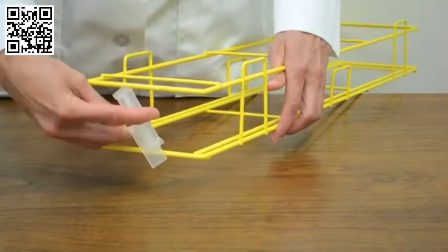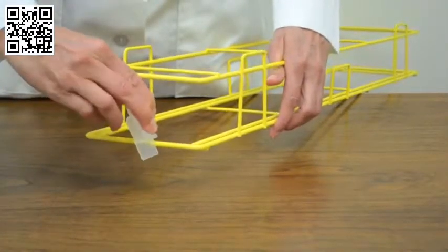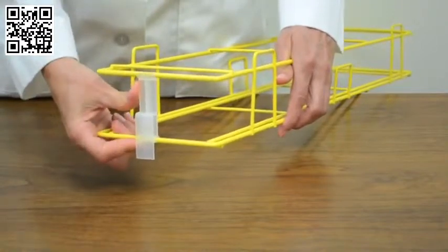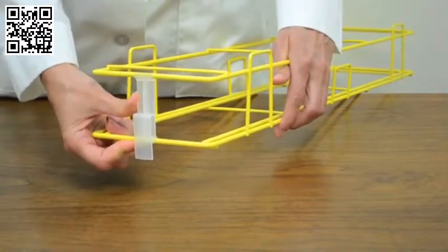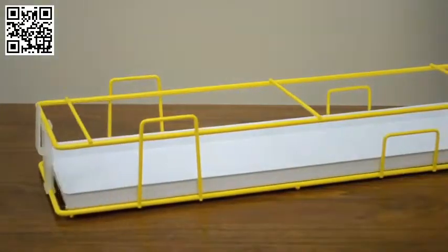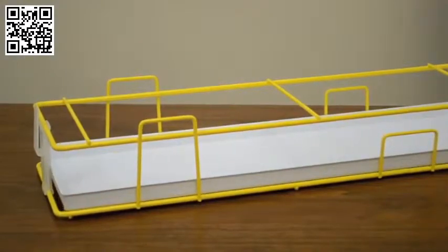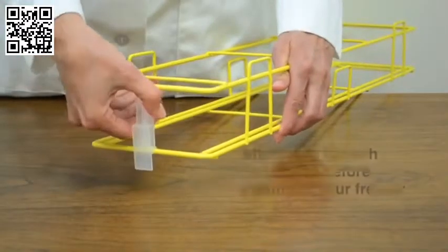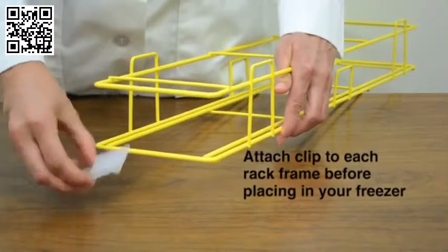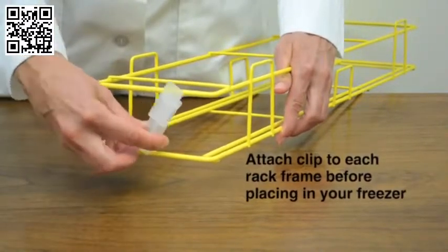Clips serve two purposes. If the tab is down, it prevents the rack from sliding forward in the freezer, and with the tab up or down, it acts as a drawer stop. It should be down for any frame that is on the bottom row and sits right on the freezer rack, and up for any frame that will form higher rows.